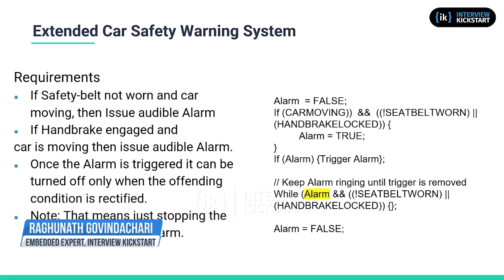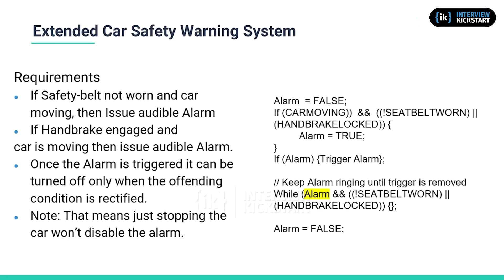Let's extend the requirements for the car safety warning system a little bit. It's exactly the same as before, except that once the alarm is triggered, it can be turned off only when the offending condition is rectified. Just stopping the car won't disable the alarm — one has to either wear the seat belt or remove the handbrake. Only then will the alarm stop, even though the trigger condition was only when the car was moving. Once the alarm is triggered, we want it to continue until the actual cause is rectified. The code for that is shown on the right side.